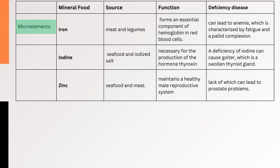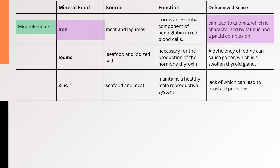Microelements are nutrients that are needed in smaller quantities. 1. Iron — Iron is a vital microelement required for the proper functioning of the human body. It is present in meat and legumes and forms an essential component of hemoglobin in red blood cells. A deficiency of this micronutrient can lead to anemia, which is characterized by fatigue and a pallid complexion.